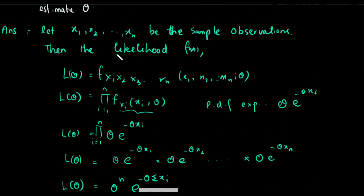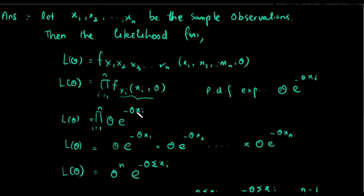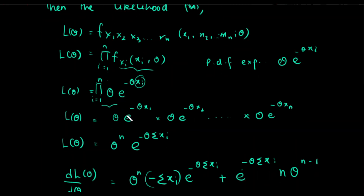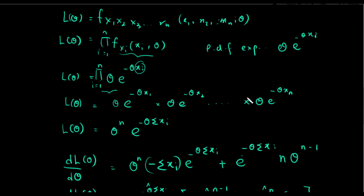So we have to use the method of multiplication over all xi random variables. The likelihood function L(theta) equals the product of theta times e to the minus theta x1, times theta times e to the minus theta x2, and so on up to theta times e to the minus theta xn. This gives theta to the power n times e to the minus theta times summation of xi.